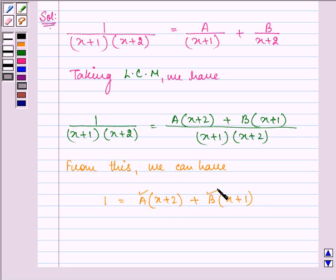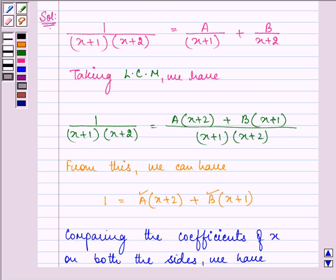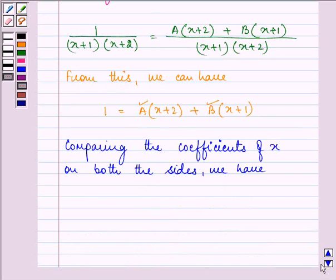Now comparing the coefficients of x on both sides, we have A plus B equals 0, which implies the value of A is equal to minus B.